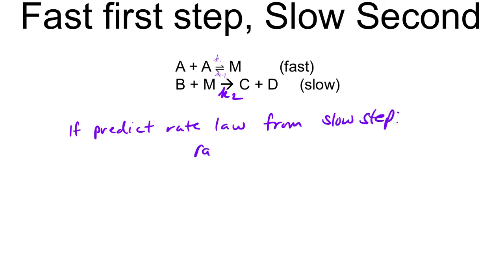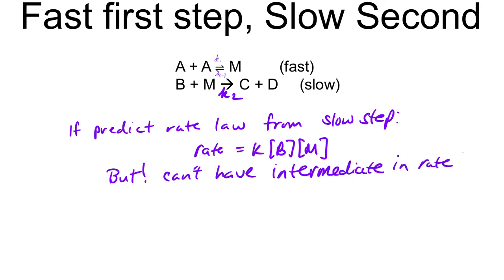Let's say we predicted the rate law from the slow step. What do we get? Rate equals K times B times M. But there's a problem here. Does anyone recognize this? There's an intermediate. You can't have an intermediate in the rate law. So that can't be the rate law.